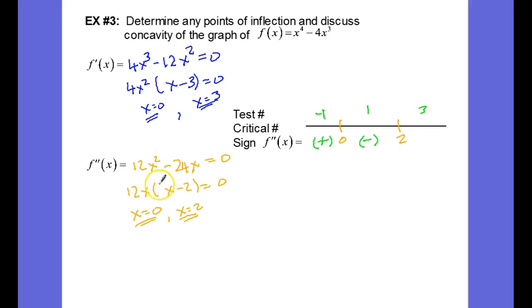And finally plugging in 3, 3 times 12 is positive, 3 minus 2 is positive, and a positive times a positive is a positive. Now what this means is that on the interval from negative infinity to 0,